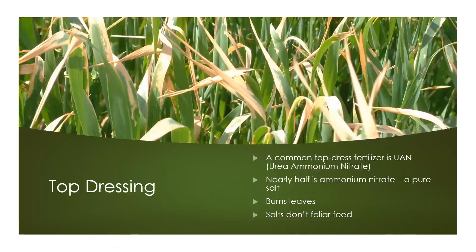Top dressing is not the same as foliar feeding. A common top dress fertilizer is UAN, or urea ammonium nitrate. Nearly half of this is ammonium nitrate, which is a pure salt. Salts do not foliar feed, and they can cause leaf burn. Plants with leaf burn are more susceptible to disease pressure. An effective foliar product will have molecules that are small enough to feed through the waxy cuticle layer on the leaf and stimulate photosynthesis by increasing the chlorophyll on the leaf.